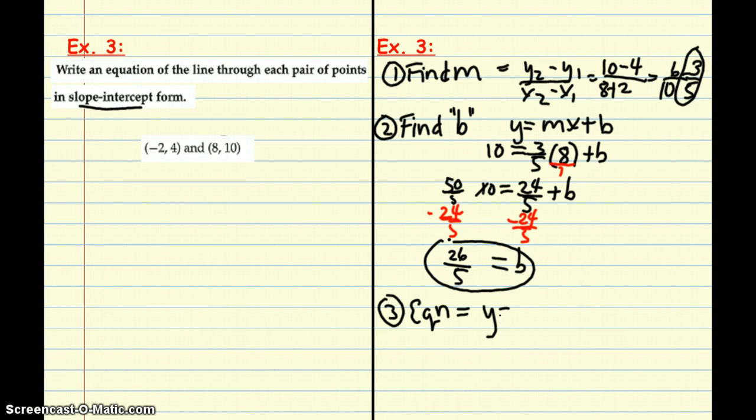y equals, our slope is 3 fifths, x plus 26 fifths. So, in this case, we had to find both slope and y-intercept before we could write that equation.